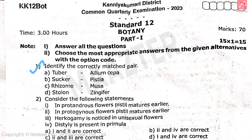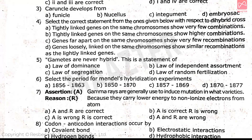First question: identify the correctly matched pair. The correct answer is option C. Question number 2: consider the following statements — the correct answer is option B. Question number 3: caruncle develops from — the correct answer is option C.